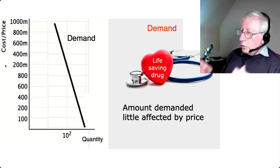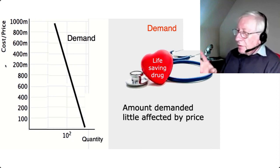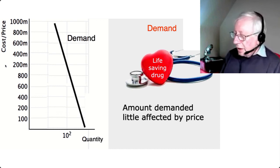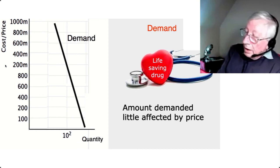But if you think of any medicine that you or somebody you know might take, in general that's not the case. If the price was low, they would buy the amount they needed for the prescription. If the price is high, they would still probably, if they can afford it, buy the quantity they need for the prescription. So demand won't vary very much depending on the price.